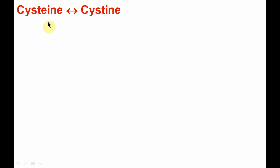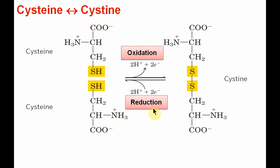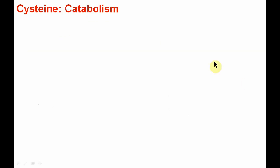Two molecules of cysteine upon oxidation synthesize cystine, forming a disulfide bond or linkage. Cystine can also be reduced back to form two molecules of cysteine. The importance of the disulfide bond is that it helps in stabilization of protein structures in the form of intra-chain or inter-chain disulfide bonds.